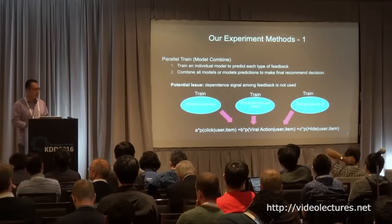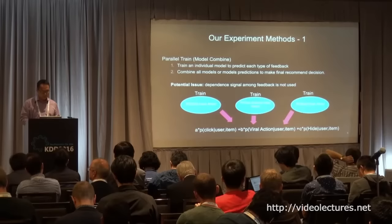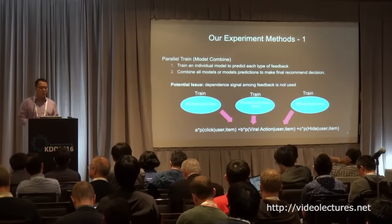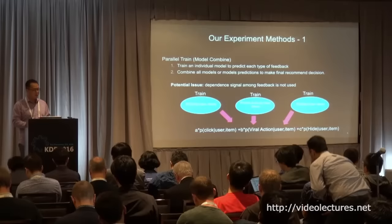That's very simple, but there's a problem: different types of feedback may have correlations. For example, if you like an article, you may also share it. If you hide an article, which means you don't like it, it's negatively correlated with like. So there are correlations between these feedback signals. If you train individually, you cannot use those correlation signals.